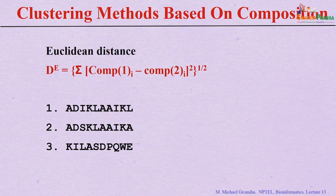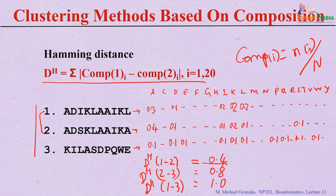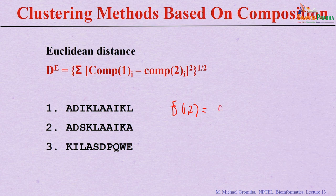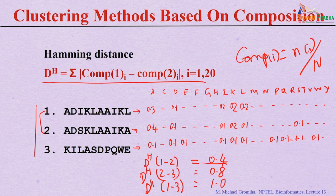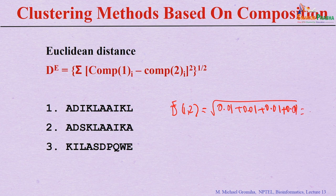Another distance measure similar to Hamming distance is the Euclidean distance. The difference is that Euclidean distance uses the sum of squares: the sum of (composition 1 of i minus composition 2 of i) squared, then take the square root. For sequences 1 and 2, computing the squared differences: 0.1 squared = 0.01 for each differing residue. Adding these terms and taking the square root gives the Euclidean distance.